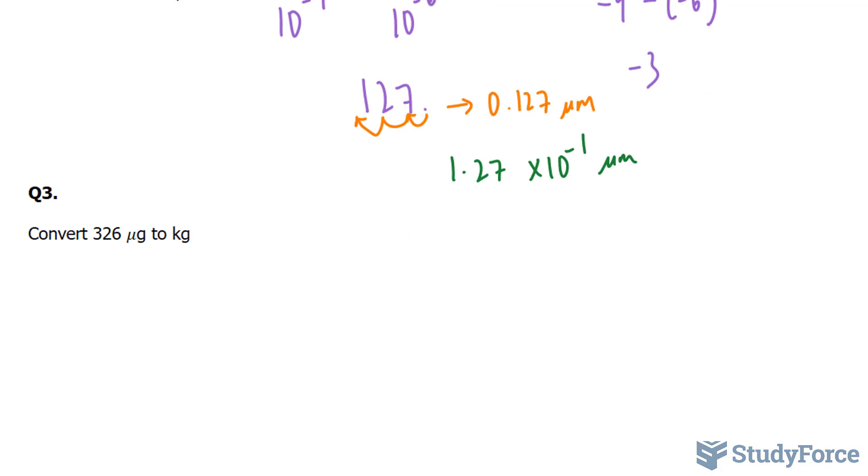Let's move on to question number 3. Here the question is asking to convert 326 micrograms to kilograms. Micrograms is a multiplier of 10 to the power of negative 6, and kilograms has a multiplier of 10 to the power of positive 3.